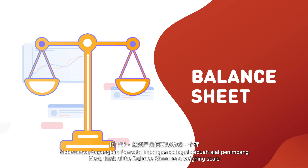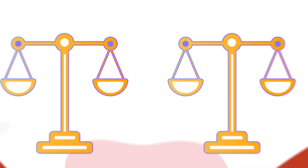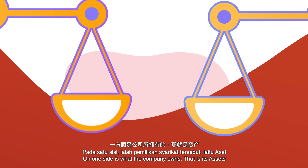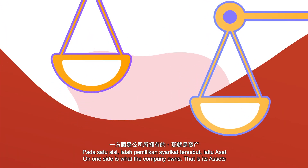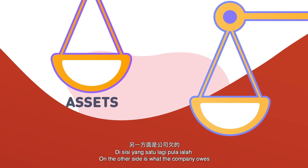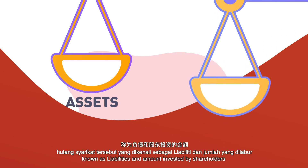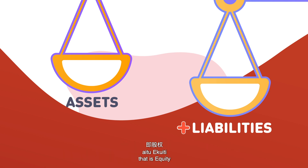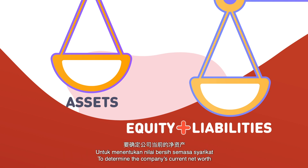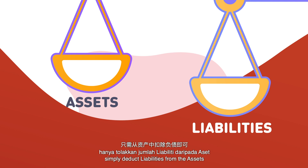Next, think of the balance sheet as a weighing scale. On one side is what the company owns — its assets. On the other side is what the company owes, known as liabilities, and the amount invested by shareholders, that is equity. To determine the company's current net worth, simply deduct liabilities from the assets.